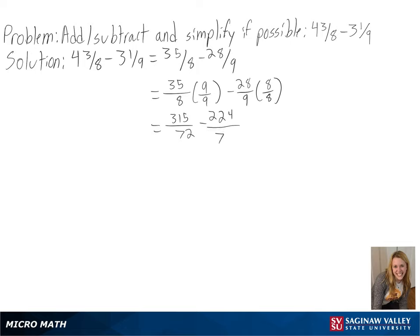After subtracting these, we get 91 over 72. And we can use long division to convert back into a mixed number and get 1 and 19 over 72 as our final answer.